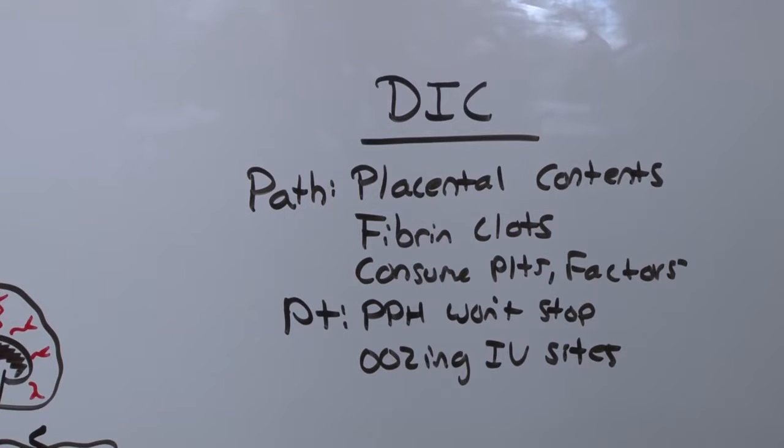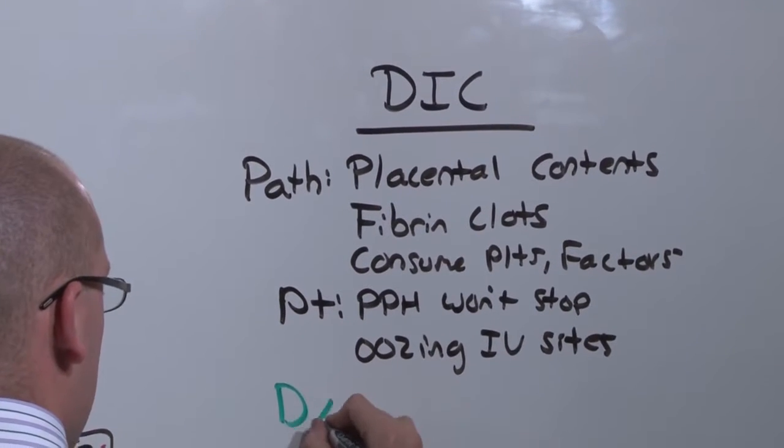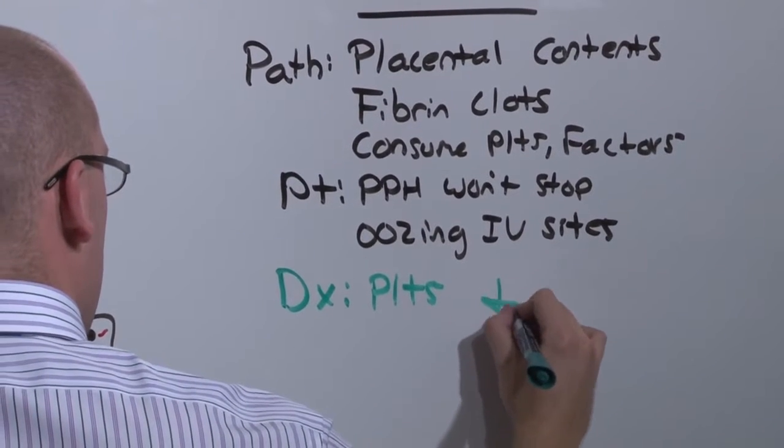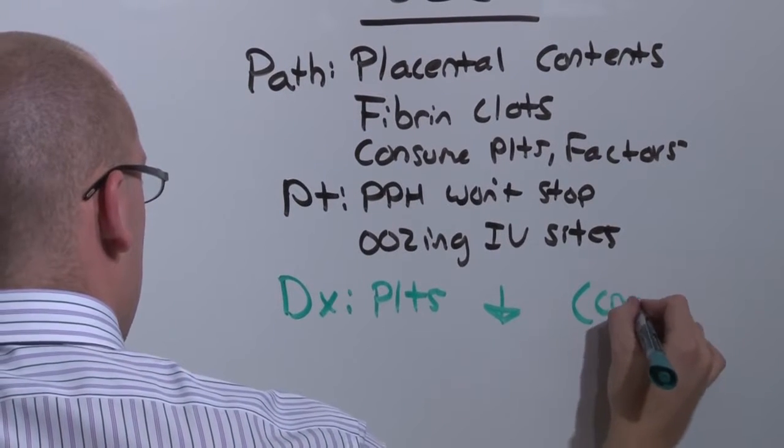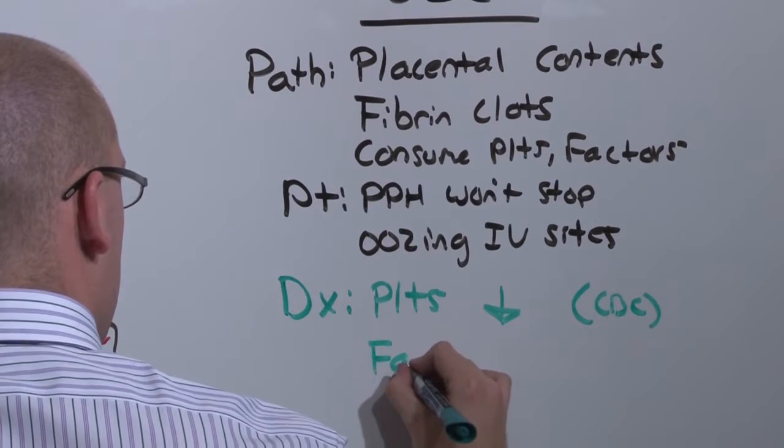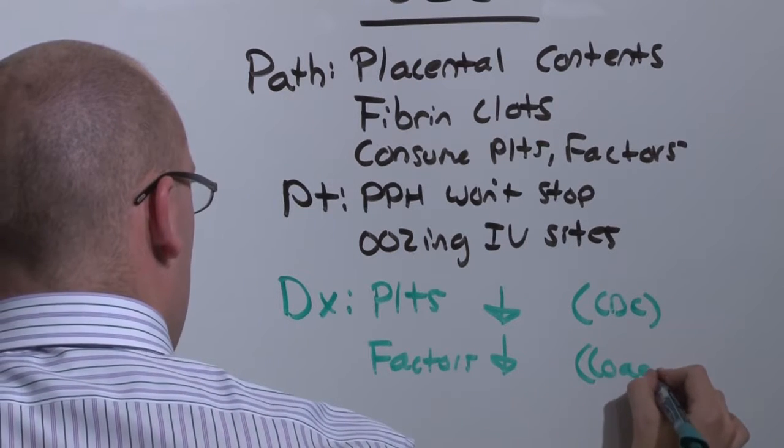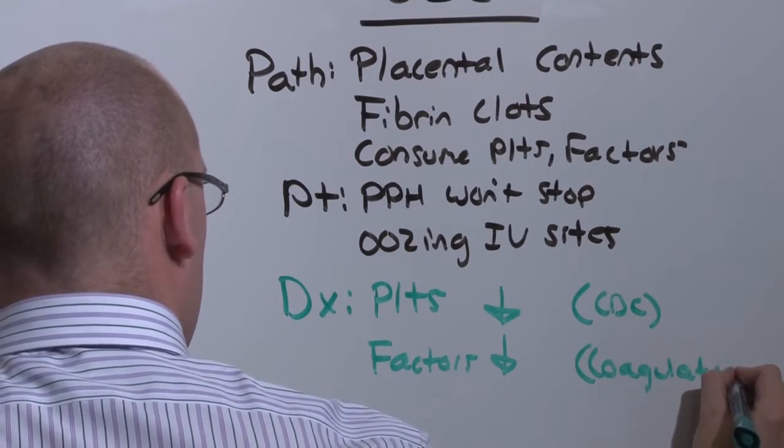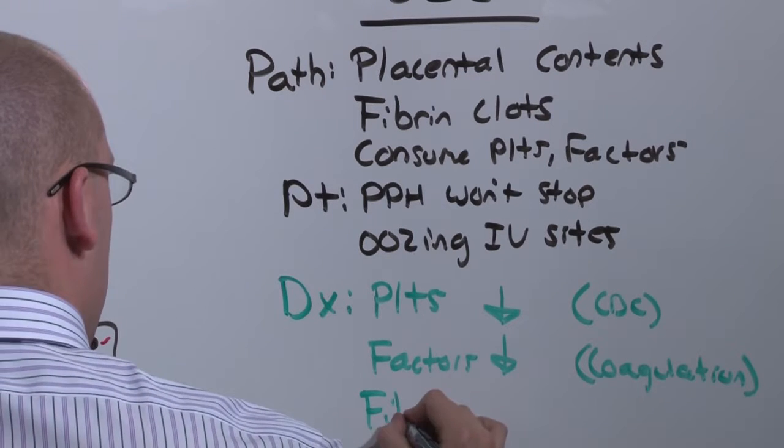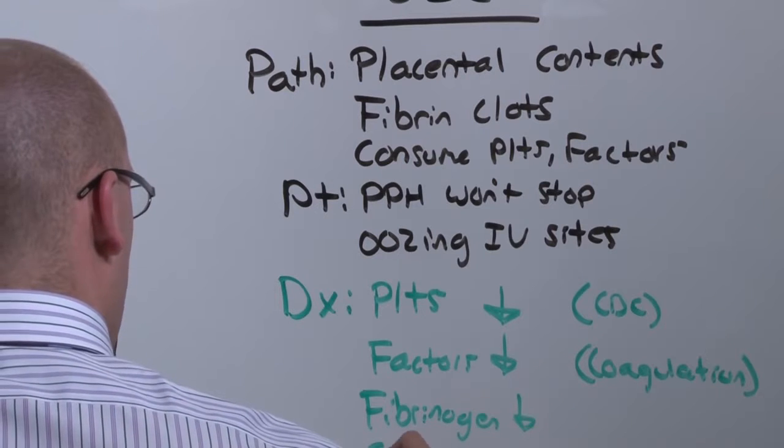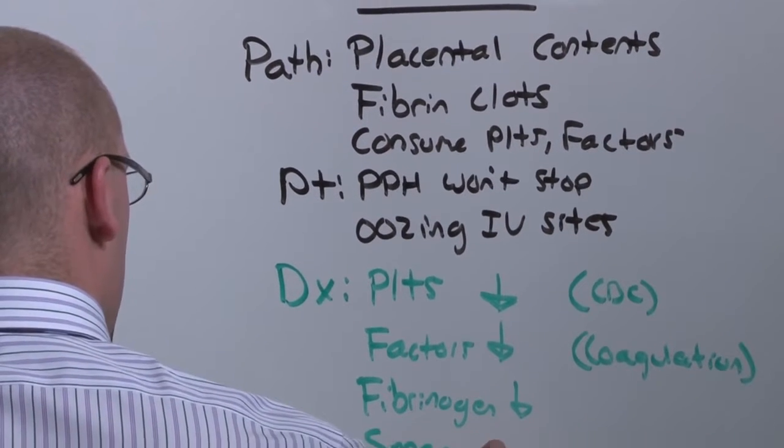If you presume that someone has DIC or has bleeding that won't stop, get a DIC panel. What you'll see is platelets that are being consumed. That's a CBC. You're going to see factors be decreased. You'll see elevation of coagulation panels, the PT and the PTT. And you'll see that fibrinogen is low. You'll also see schistocytes on a smear.